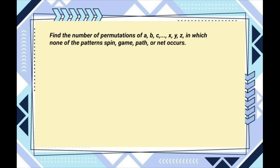Find the number of permutations of A, B, C, X, Y, Z in which none of the patterns spin, gain, path, or net occurs.